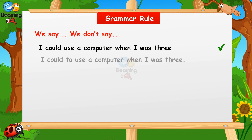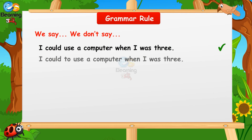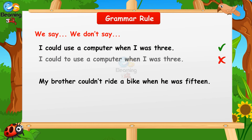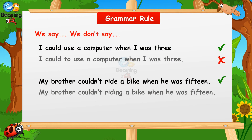We say — we don't say: correct: 'I could use a computer when I was three.' Not: 'I could to use a computer when I was three.' Correct: 'My brother couldn't ride a bike when he was 15.' Not: 'My brother couldn't riding a bike when he was 15.'